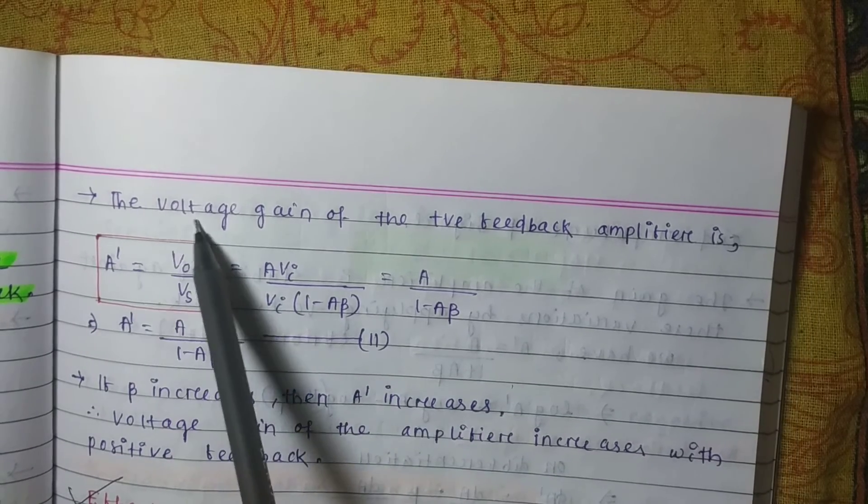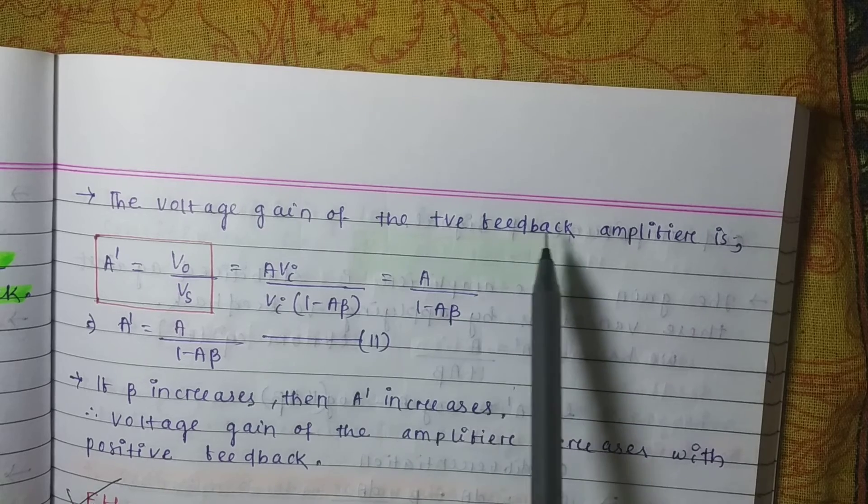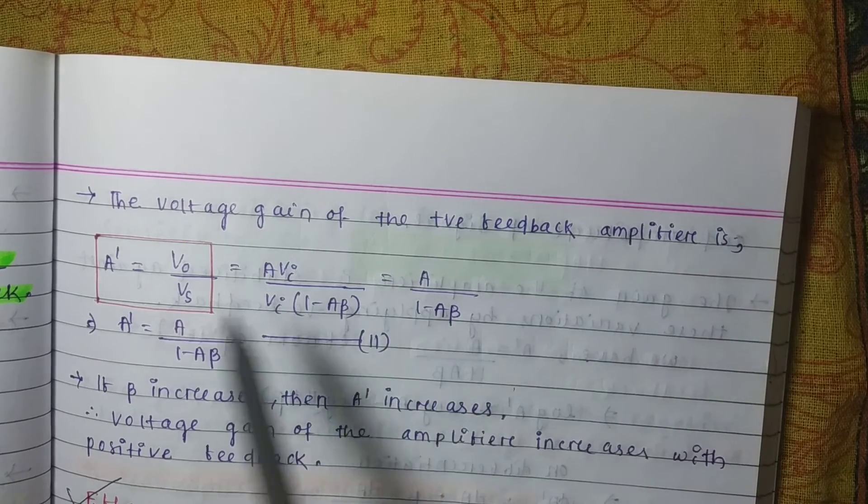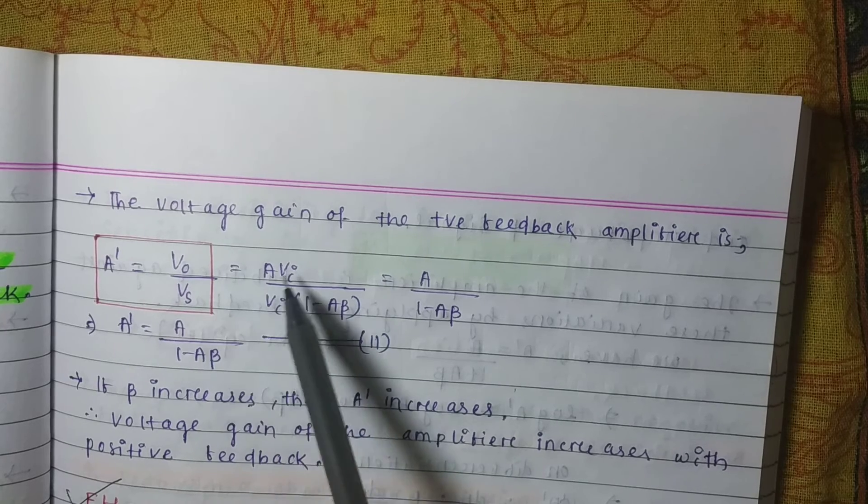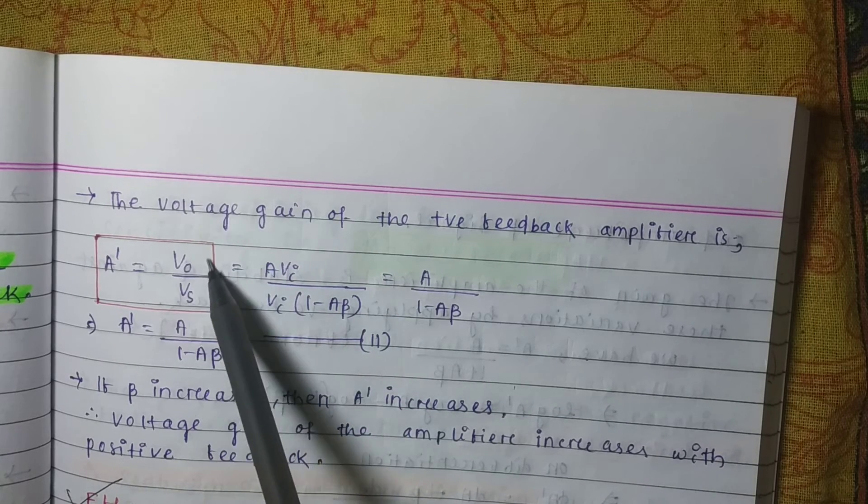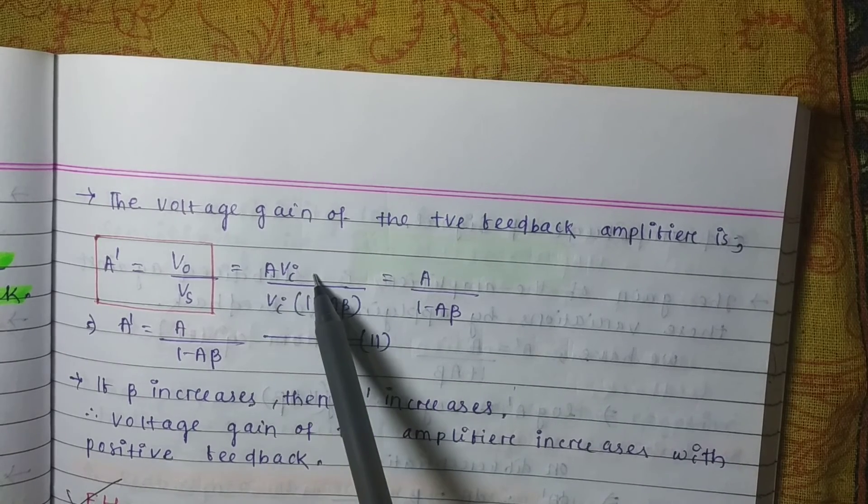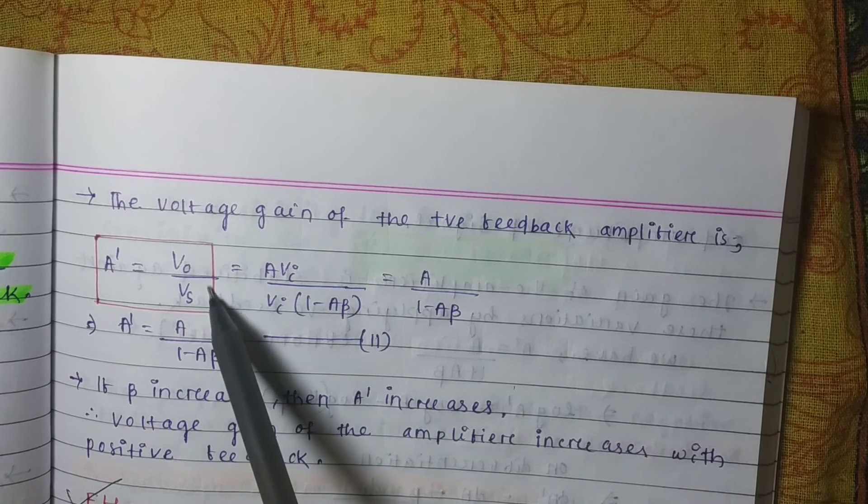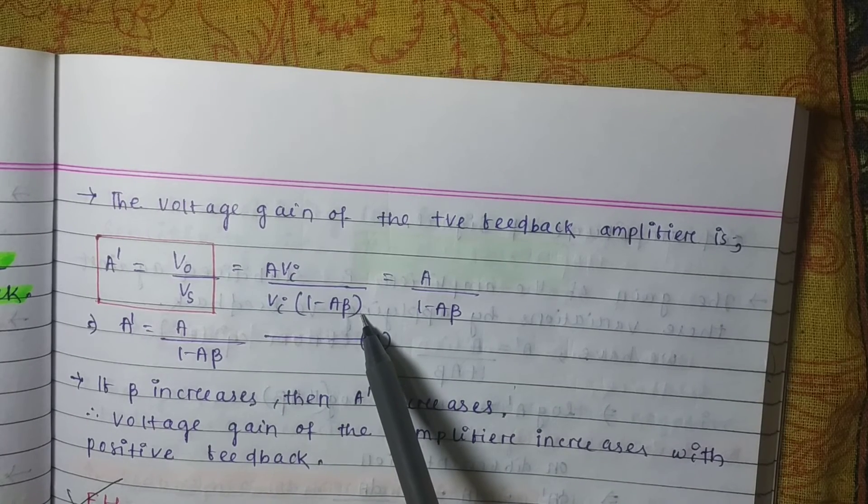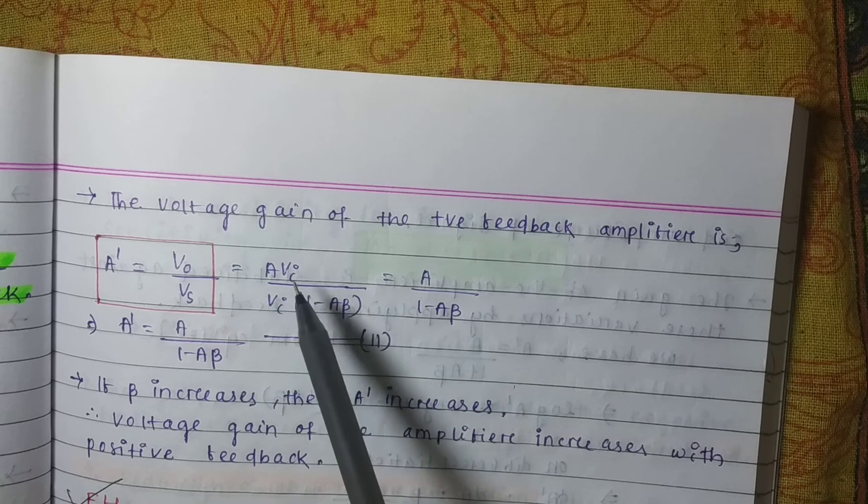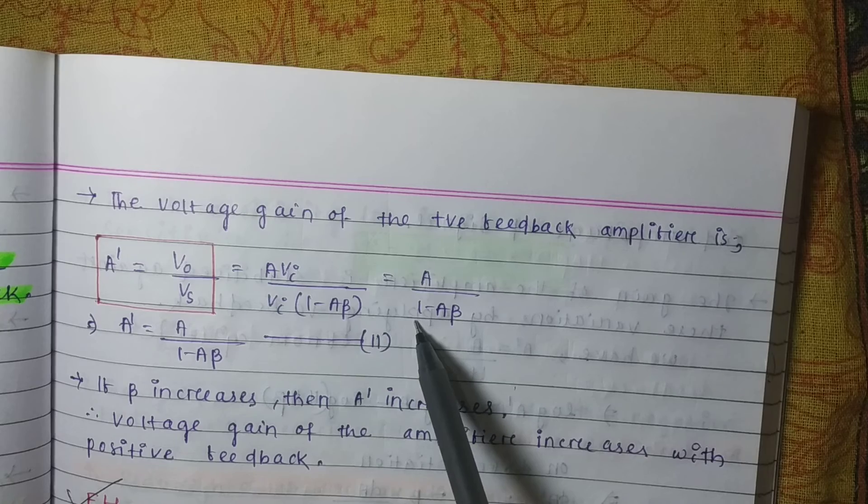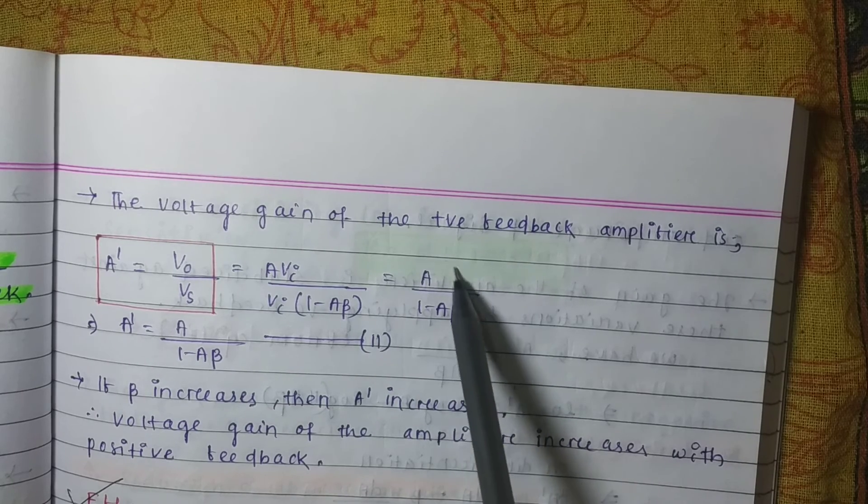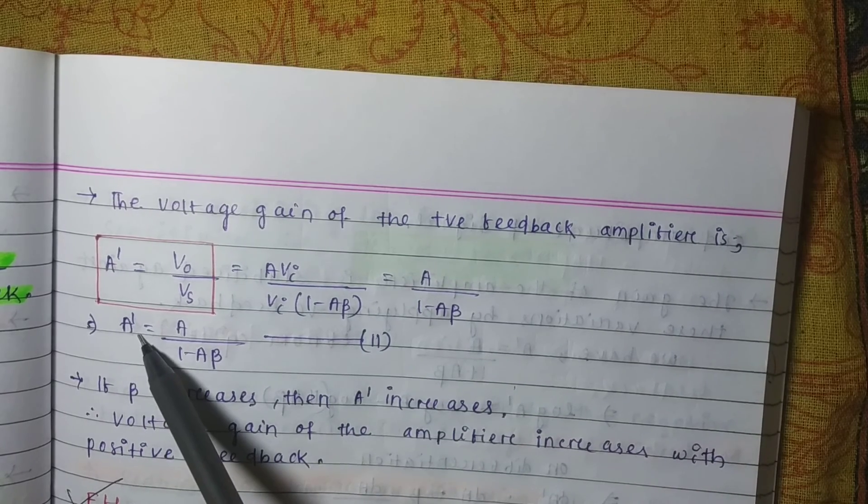The voltage gain of the positive feedback amplifier is A prime equals to V O by V S. What is the value of V O? A V I. And what is the value of V S? V I into 1 minus A beta. V I V I got cancelled. We get A by 1 minus A beta. This is the value of A prime.